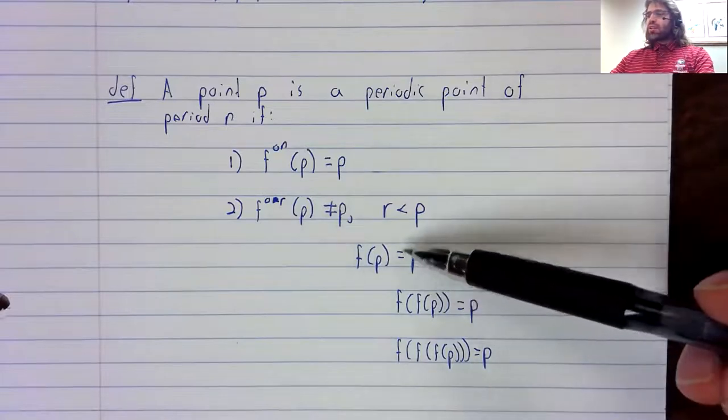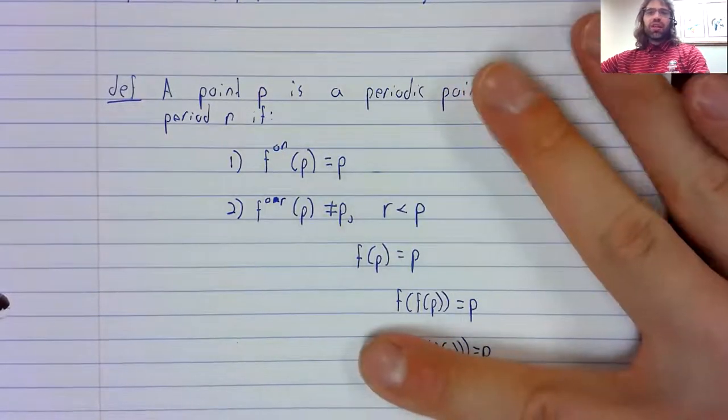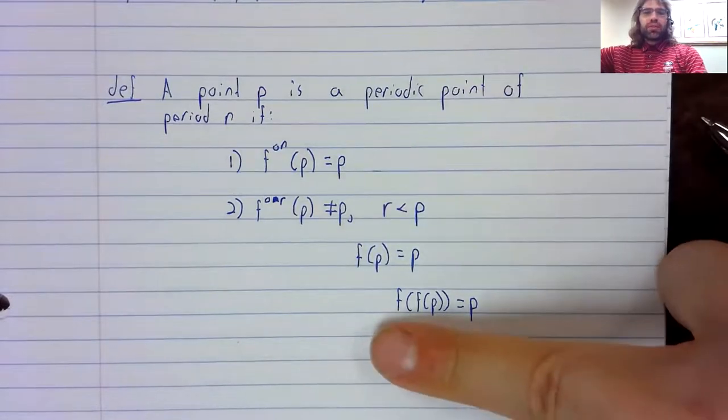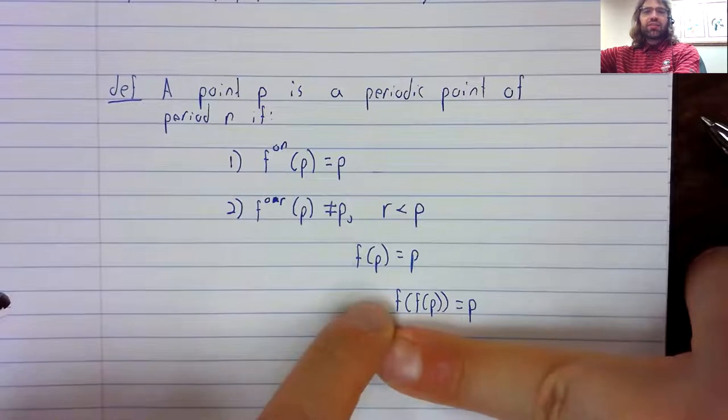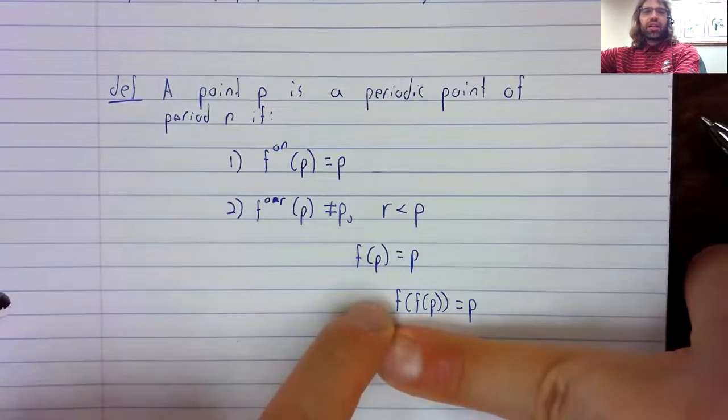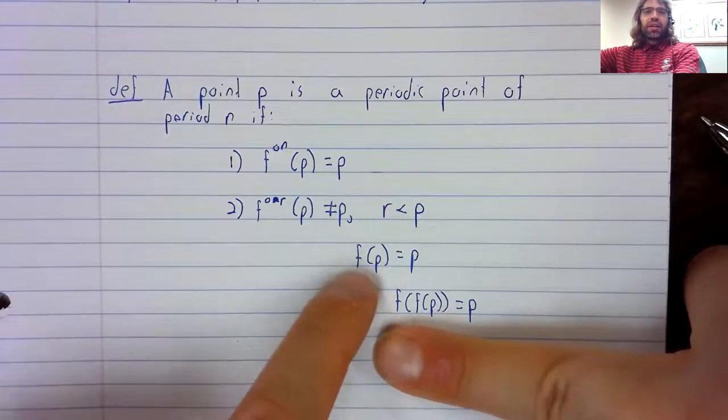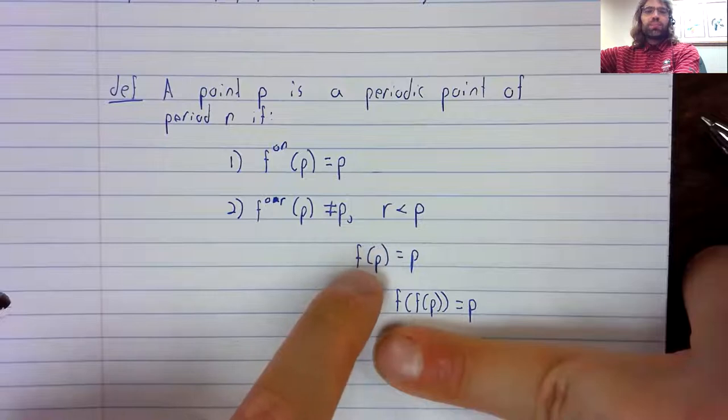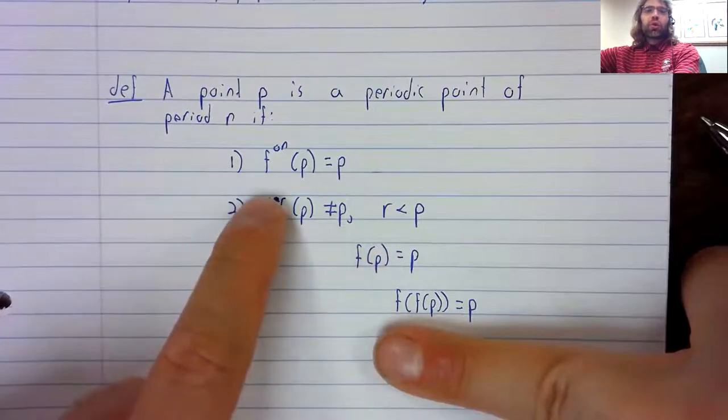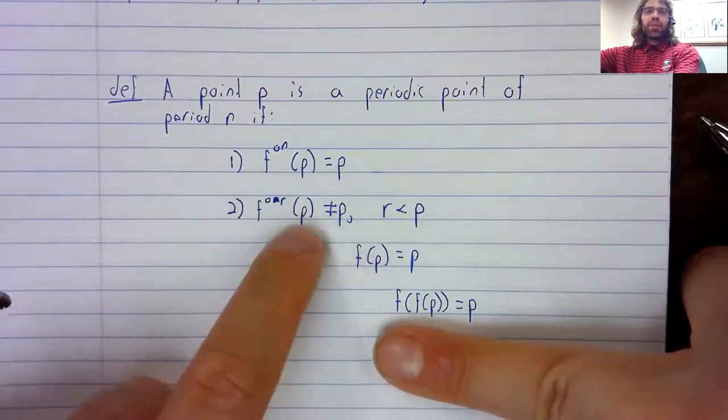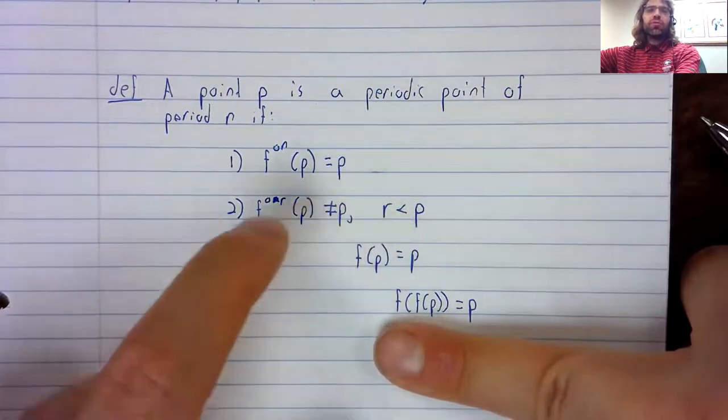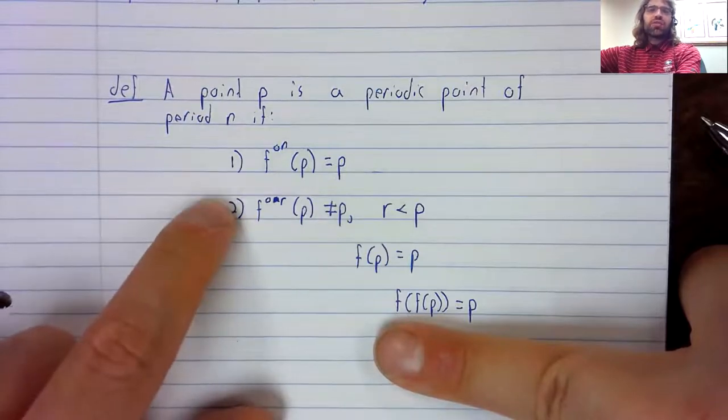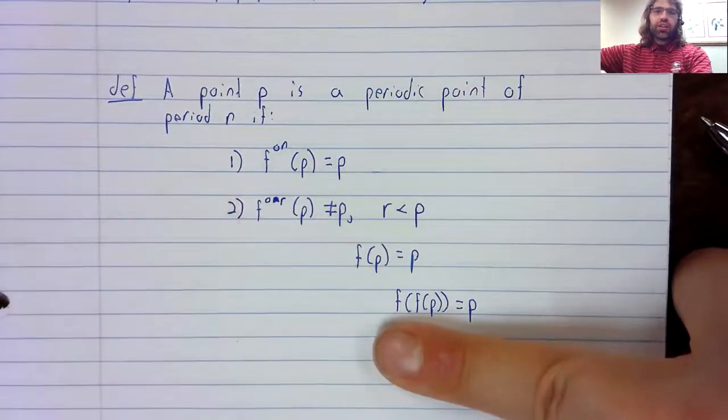The reason that P is not a periodic point of period two, in spite of satisfying this condition, is that F of P equals P, F circle one of P equals P, one is less than two. So it flunks this second condition.